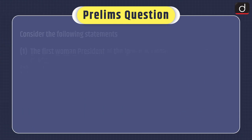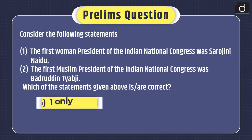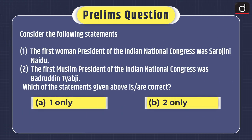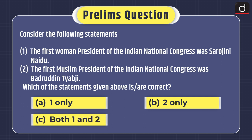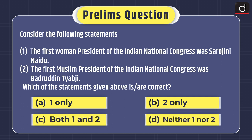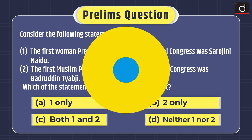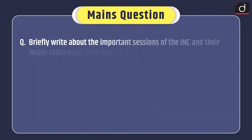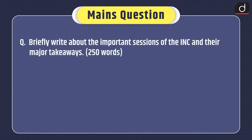Now it's time for the practice questions. First, a President's question: Consider the following statements. 1. The first woman President of the Indian National Congress was Sarojini Naidu. 2. The first Muslim President of the INC was Badruddin Tyabji. Which of the statements given above is or are correct? One only, two only, both one and two, or neither one nor two. And now a Mains question: Briefly write about the important sessions of the INC and their major takeaways.